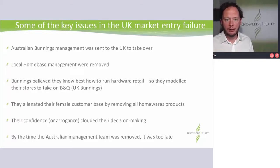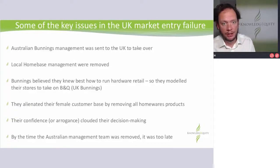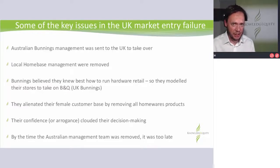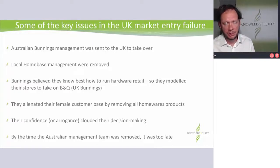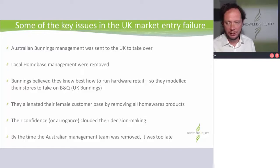Bunnings also came with an attitude: we know how to run retail. Home Base is a little bit different — it has a whole lot of homeware products and a large female customer group that liked to go there to buy that sort of stuff. And Bunnings said no, we're not doing that — we're going to take on B&Q, which are essentially the UK Bunnings. We can do it better. We've nailed it in Australia. Whether it was just confidence or extreme confidence slash arrogance that clouded decision making, it just didn't go well at all.